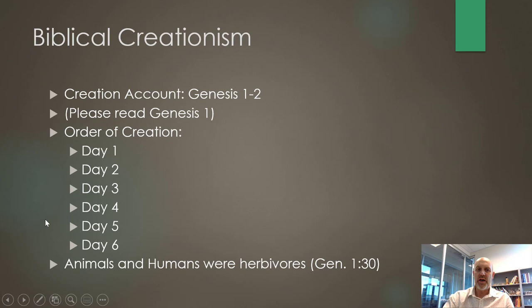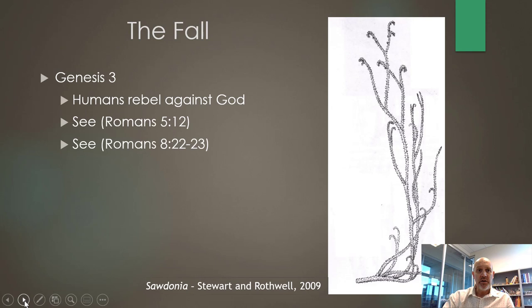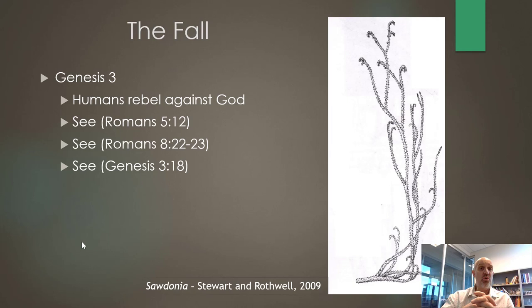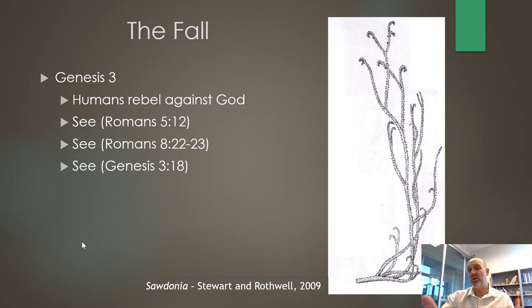Hopefully you did that and didn't skip ahead. We're going to talk about that list in a moment, but something very important we need to recognize is that in Scripture there is the reality of the fall. Humans rebelled against God in Genesis chapter 3. We learn in Romans 5:12 that man was cursed with death, and in Romans 8:22-23 that the entire creation is cursed and groaning, which we also see in Genesis 3:18.